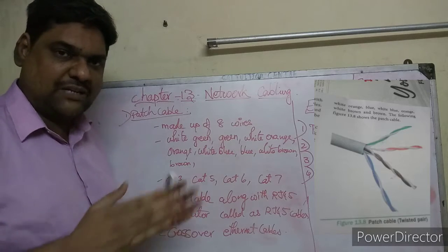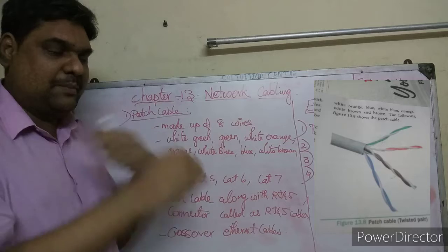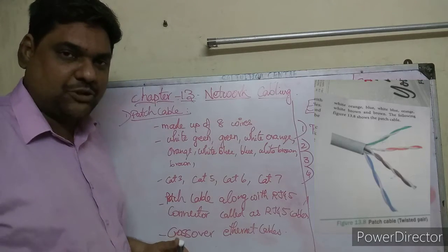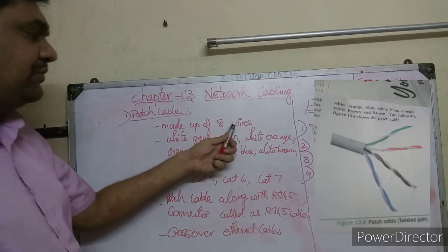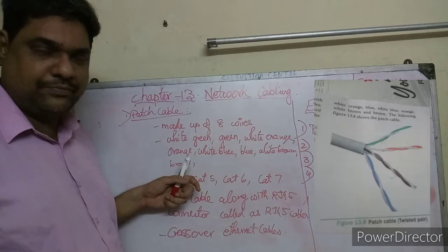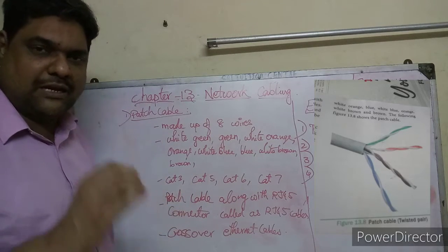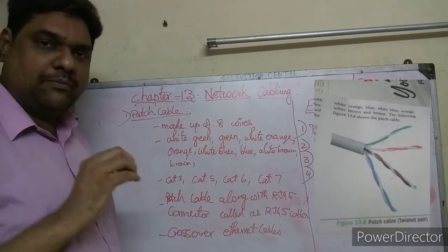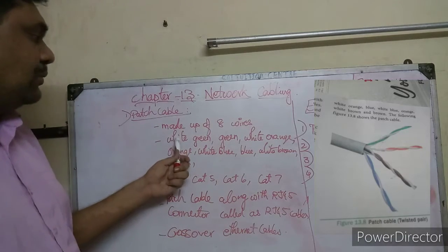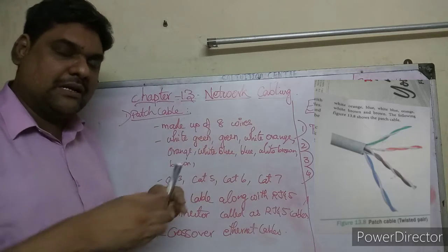The patch cable has 8 wires. It is made up of 8 wires. These 8 wires are made up of colors - 4 solid colors and 4 mixed colors. Solid means a single color. The wire arrangement we will see next.